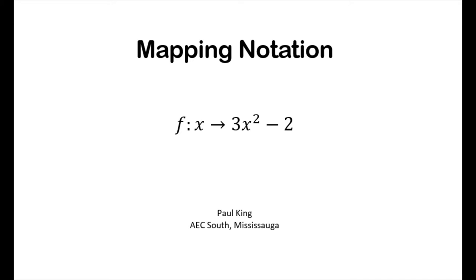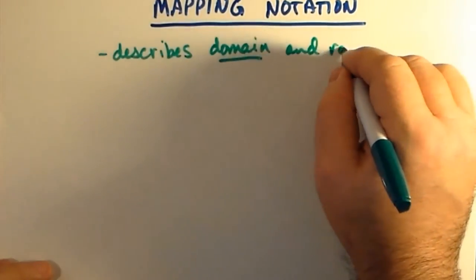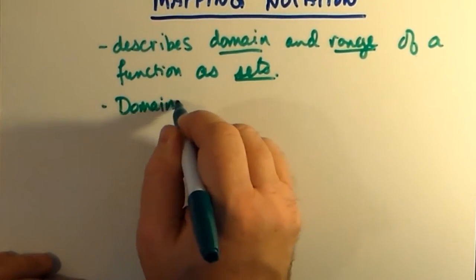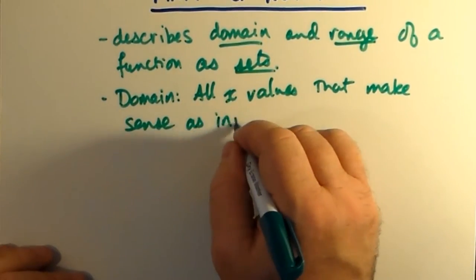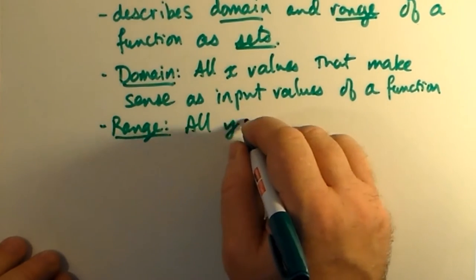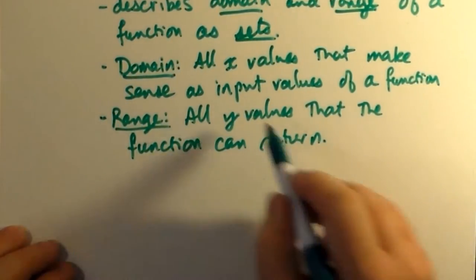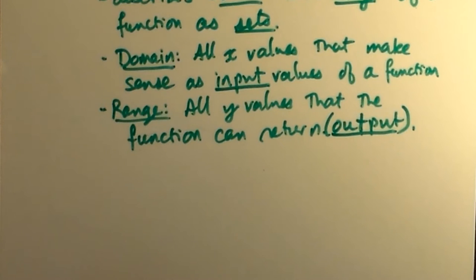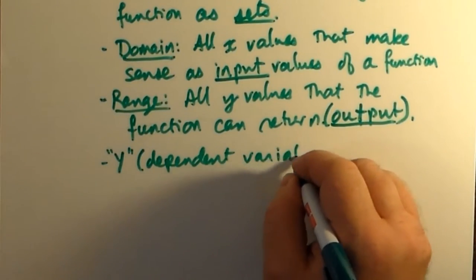Welcome to this video on mapping notation. Mapping notation describes domain and range in a special way, calling attention to them and allowing their description as sets. The domain of a function includes all x values that make sense as input values, and the range includes all y values that the function can return — also described as output values.